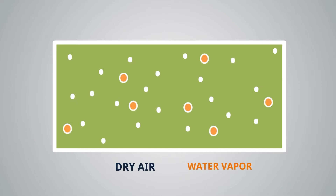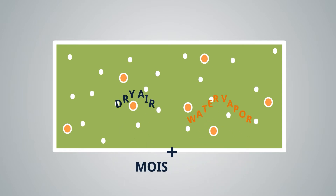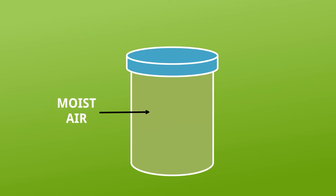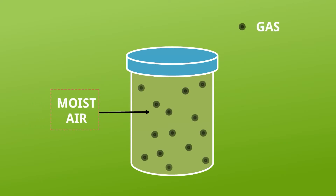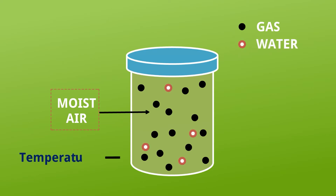Dry air and water vapor together make the moist air. Relative humidity is all about moisture or moist air. Consider an enclosed container with moist air — it contains gases like nitrogen, oxygen, carbon dioxide, helium, neon, argon, and water vapor. We are keeping the temperature constant, because if we change the temperature the moisture content will change.